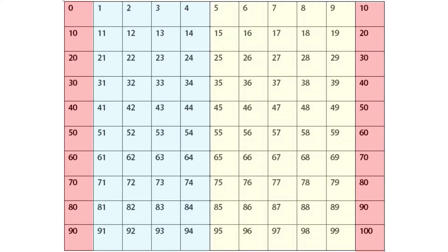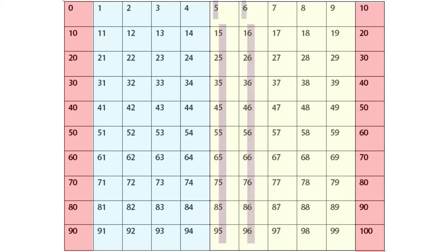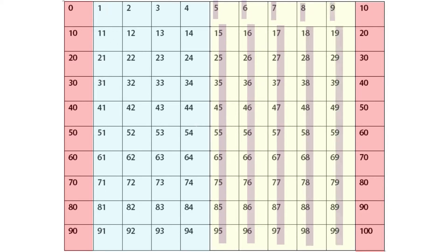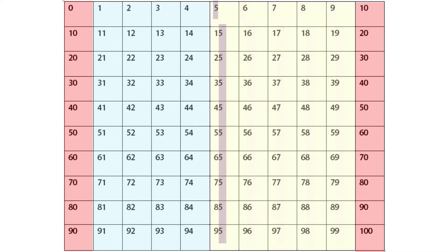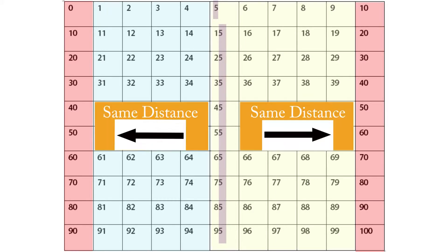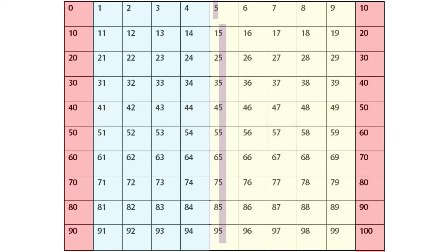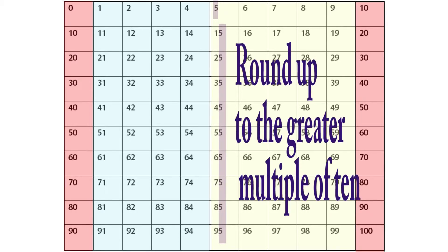The right side of the chart includes numbers that are rounded up to the larger multiple of ten. These numbers have a five, six, seven, eight, or nine in the ones place. The column that has fives in the ones place is actually the same distance from the smaller multiple of ten and the larger multiple of ten. However, we round those up to the larger multiple of ten.